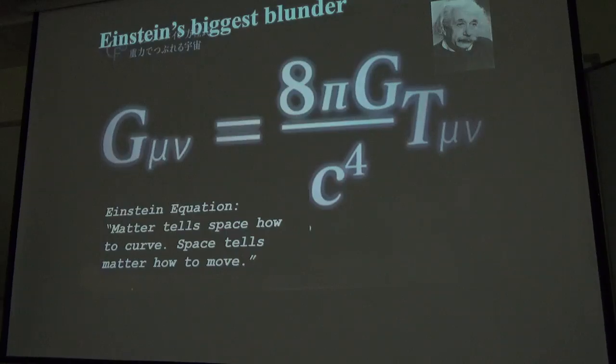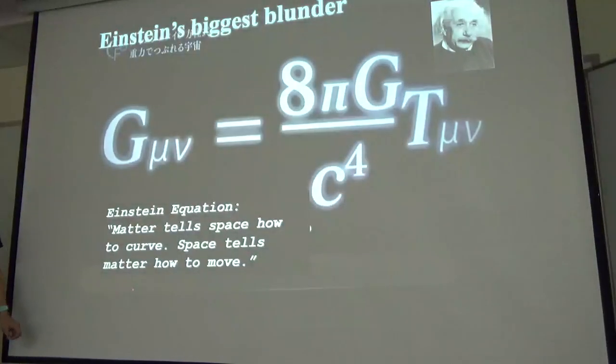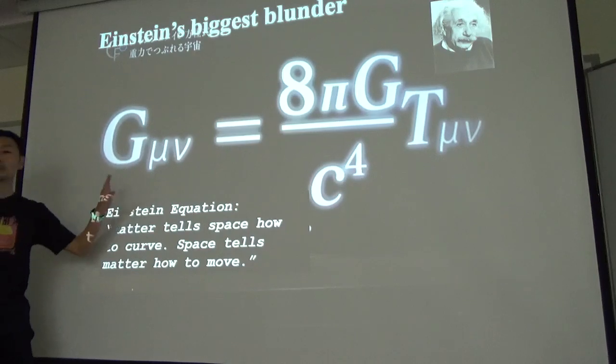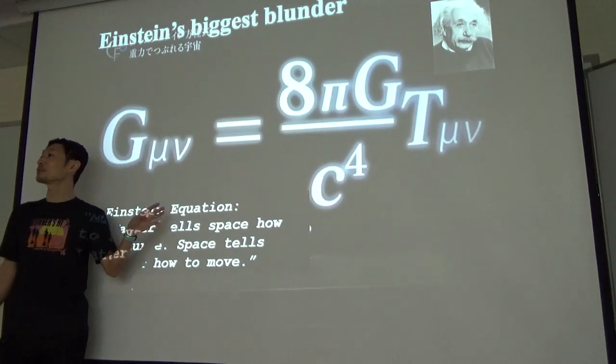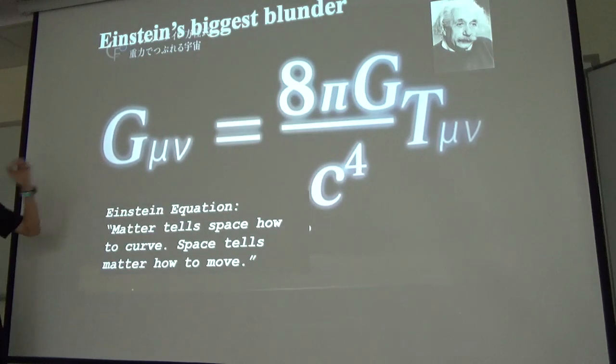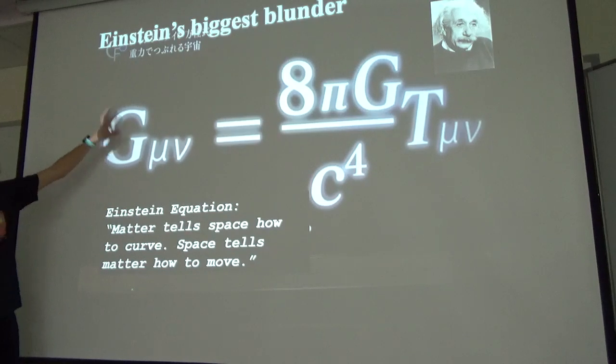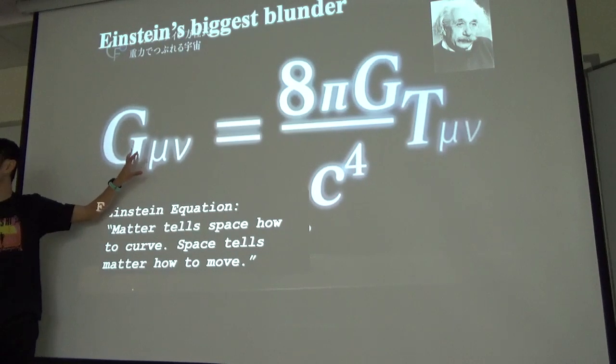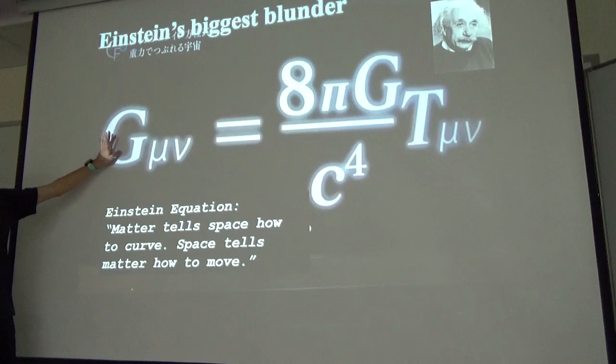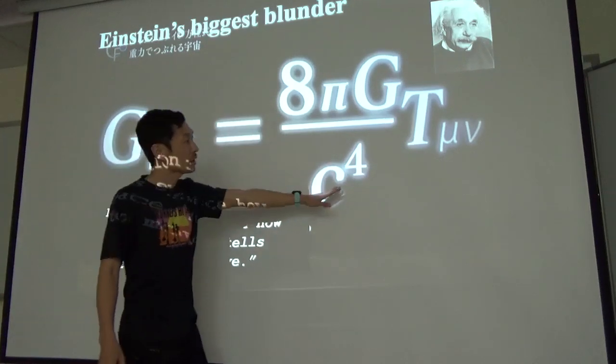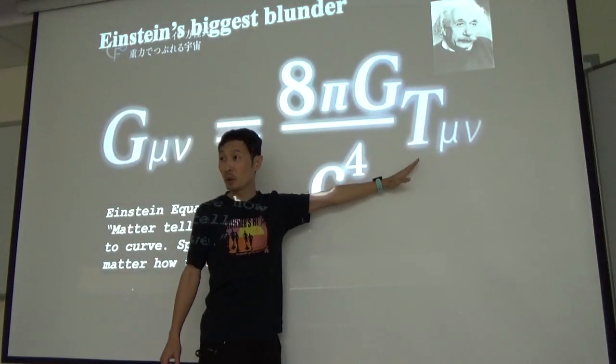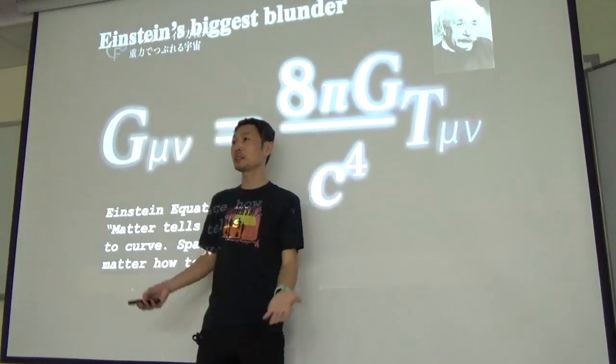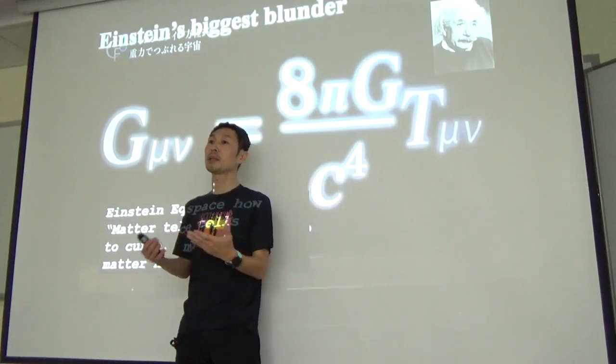Einstein's Biggest Blunder. So again, this is the more simplified version of Einstein's general relativity. The left side is the space curvature, how much space is curved. And then the right side is the energy tensor. Energy tensor is the sum of all the energy including mass and momentum.